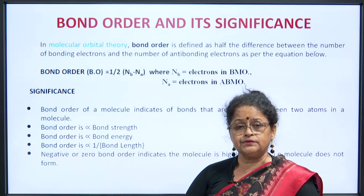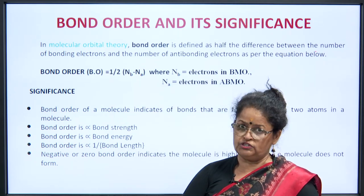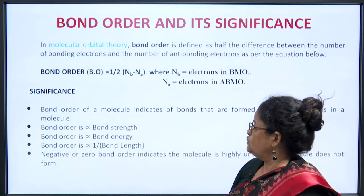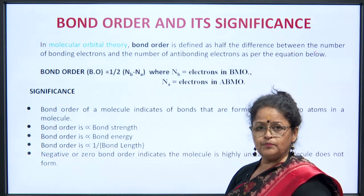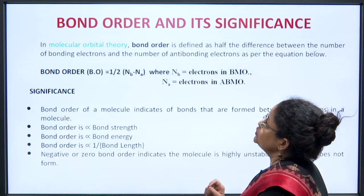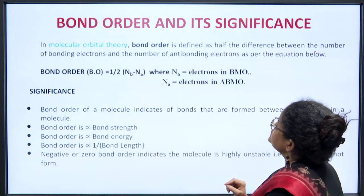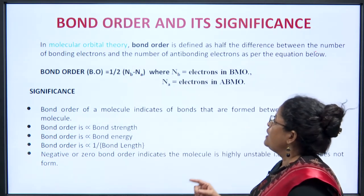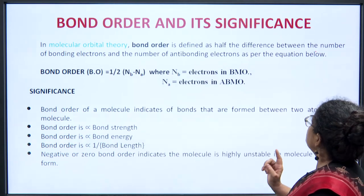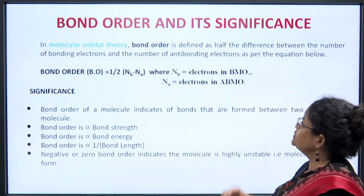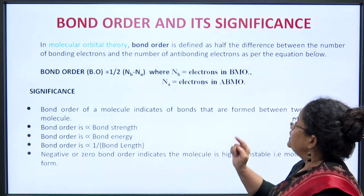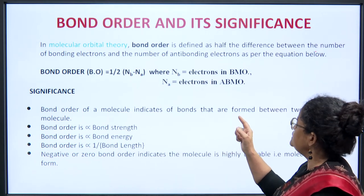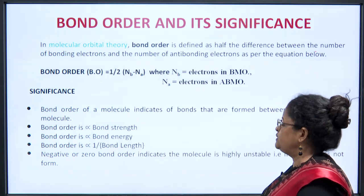In our previous lecture, we had already written the electronic configuration as per MOT for various molecules using a general formula. Now, having written the electronic configuration of a particular molecule, we can find out the bond order. In molecular orbital theory, the bond order is defined as half the difference between the number of bonding electrons and the number of antibonding electrons. Bond order equals half of NB — the number of electrons in the BMOs — minus NA — the number of electrons in the ABMO, that is the antibonding molecular orbital.